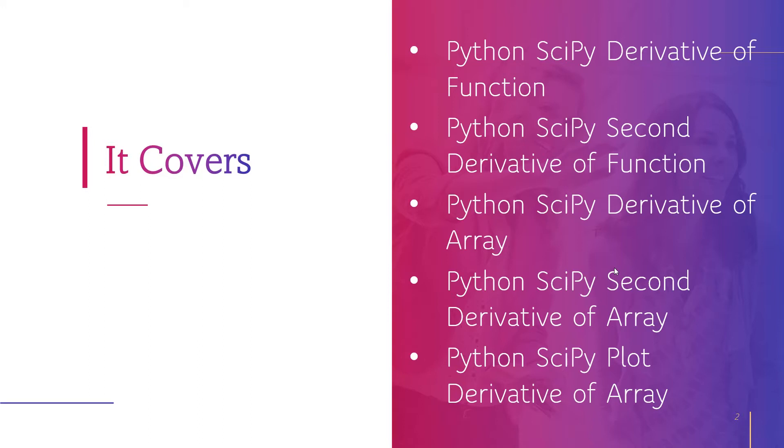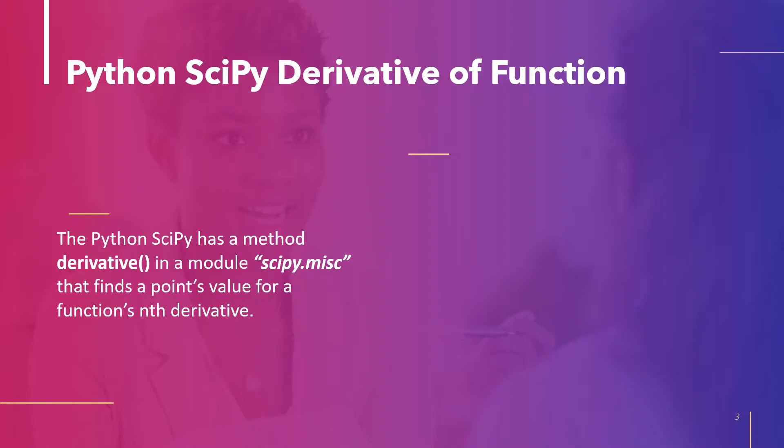Now let's move to the first topic: Python SciPy derivative of a function. A function's rate of change concerning an independent variable can vary — this is what derivatives are. The derivative is most frequently used when a variable quantity and a variable rate of change exist.